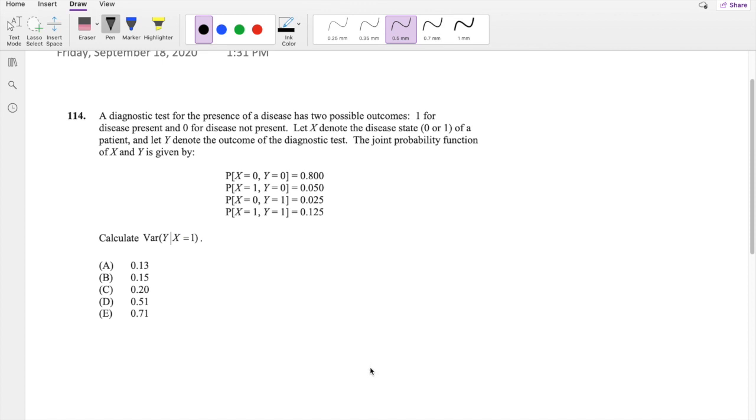Okay, so if you have time to do it, let's just dive right in. Basically this question is asking for a conditional variance of Y given X equals 1. As always, I like to start off with just a regular probability function, conditional probability.